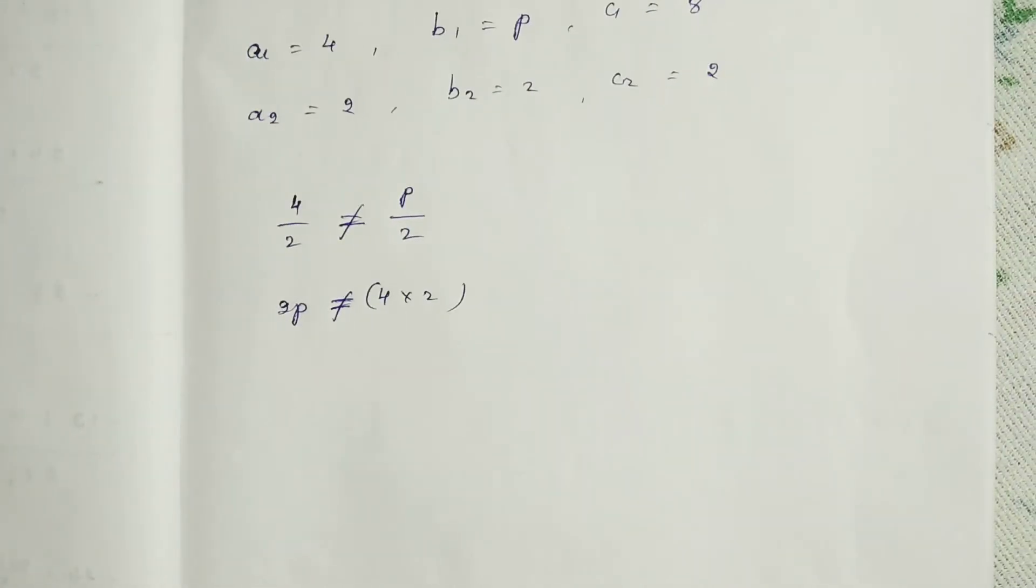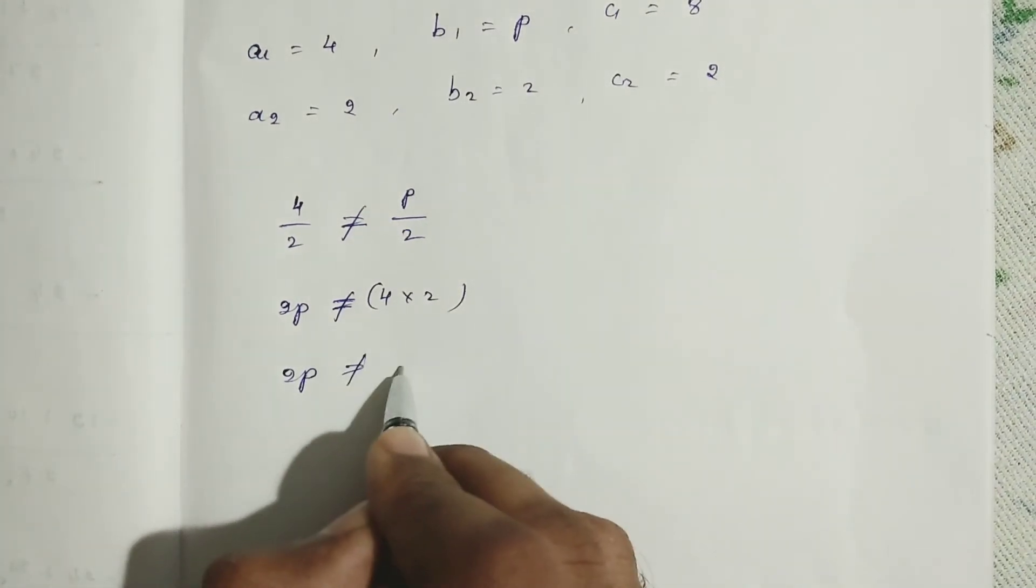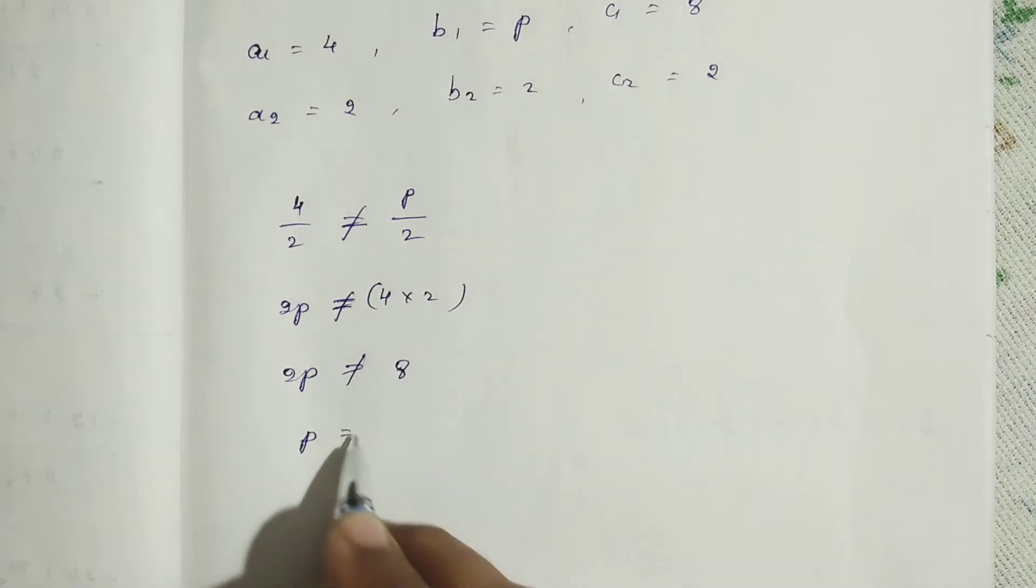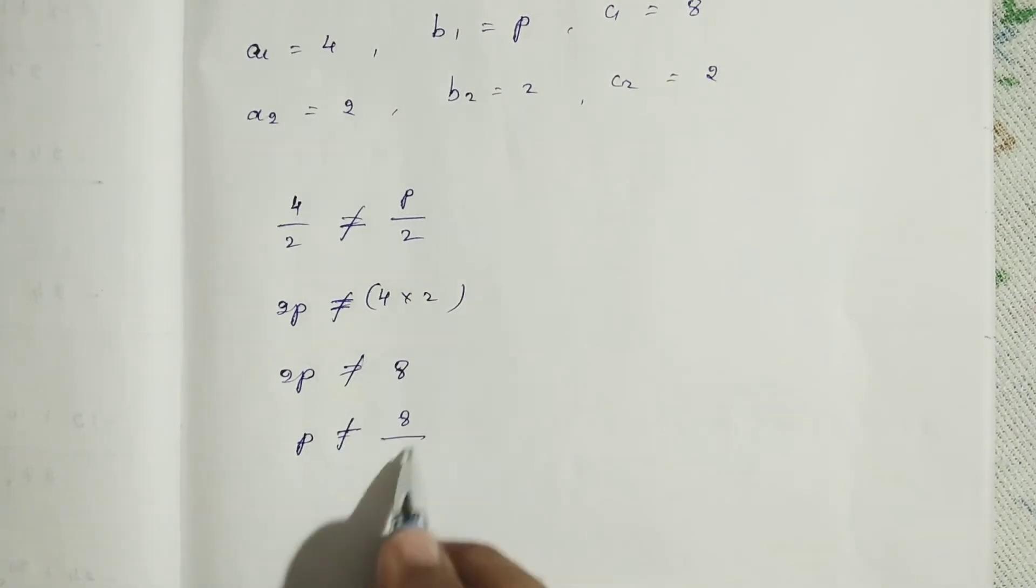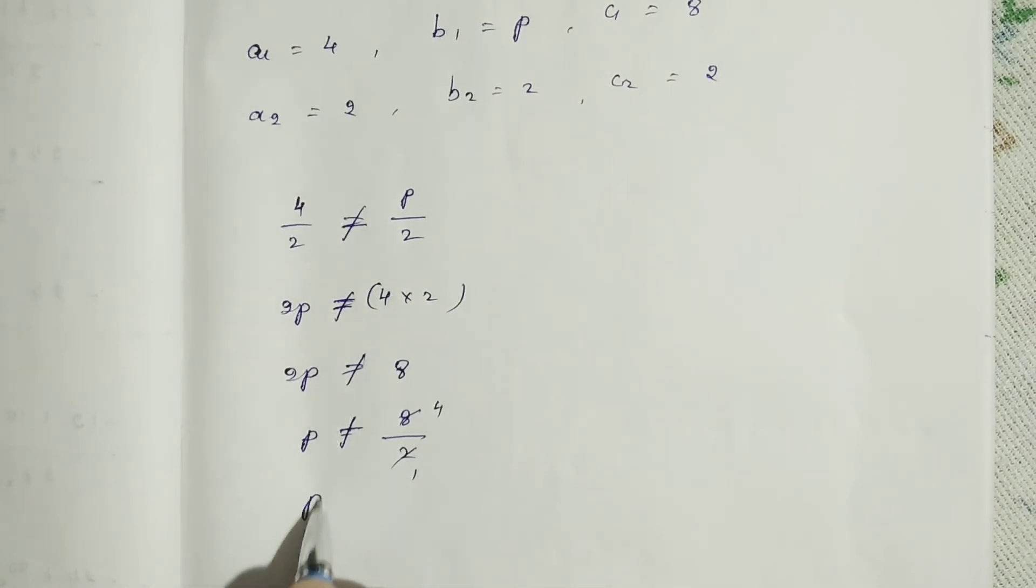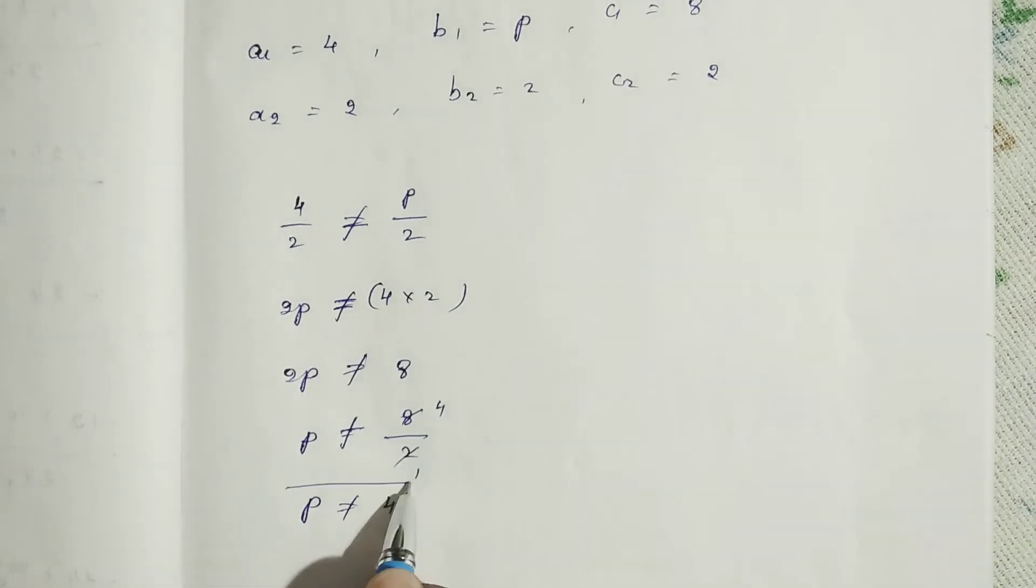Next, 2p not equal to 8. Then, here multiplication by 2 equals 2. So 2p not equal to 8 divided by 2. So p not equal to 4. Clear?